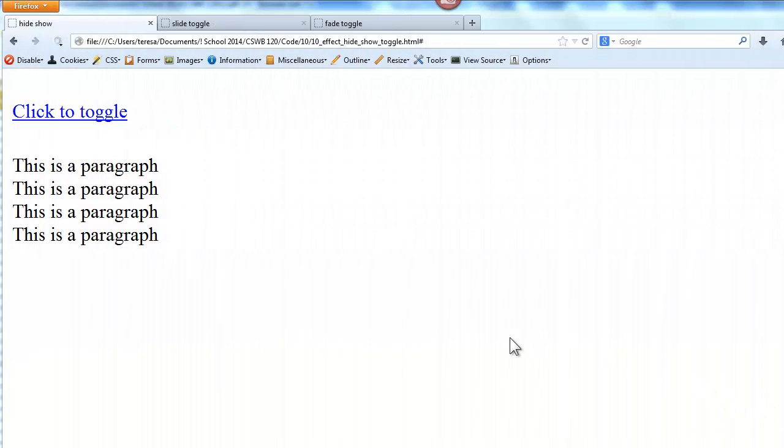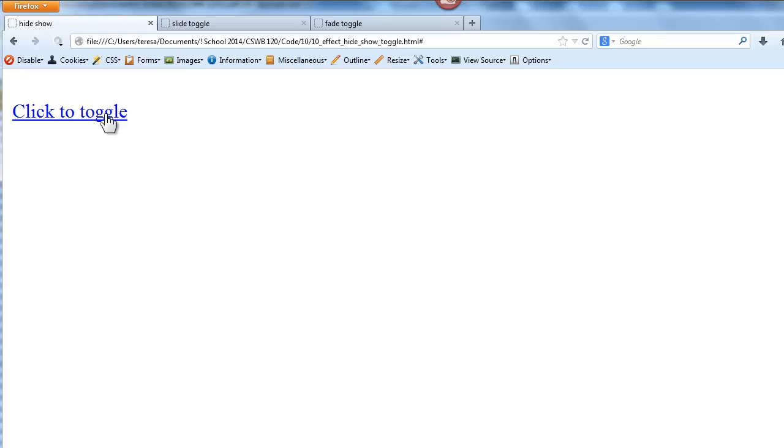So here we see an example of the toggle effect method. Here we have a paragraph. When I click, I will slowly hide it, which essentially is the hide method. When I click again, I will slowly show it, which is the show method. So I am toggling between the hide and show methods.